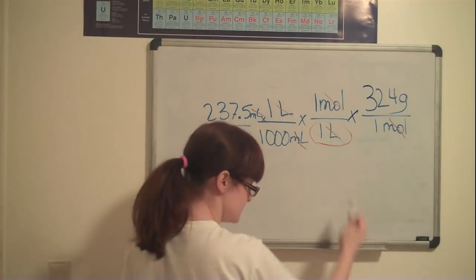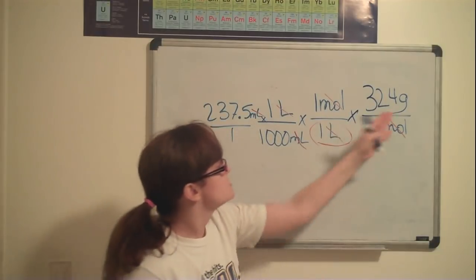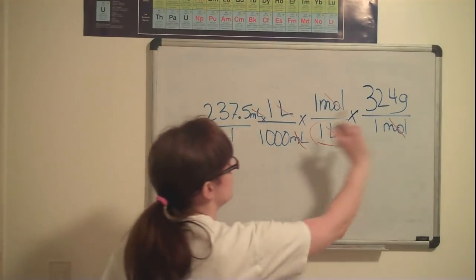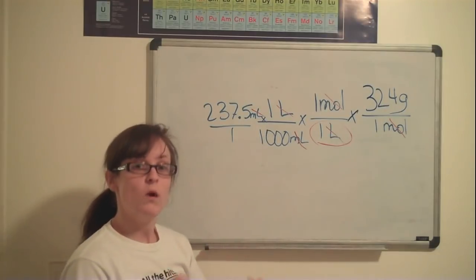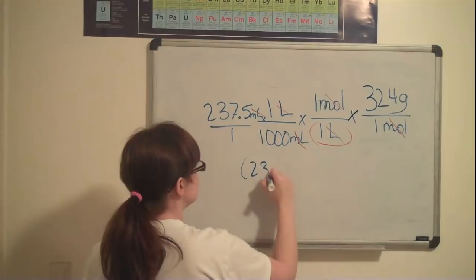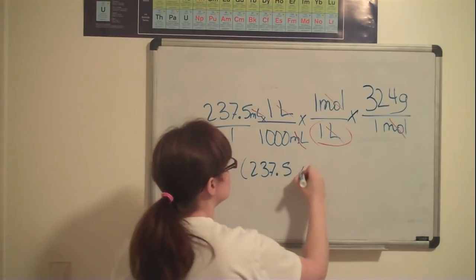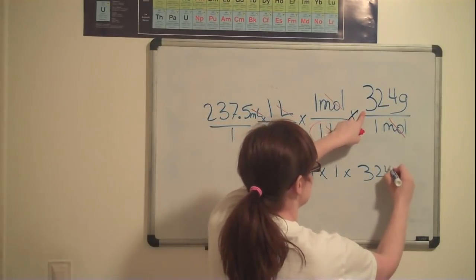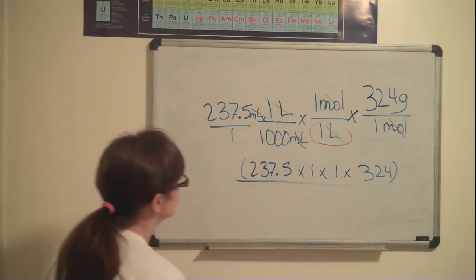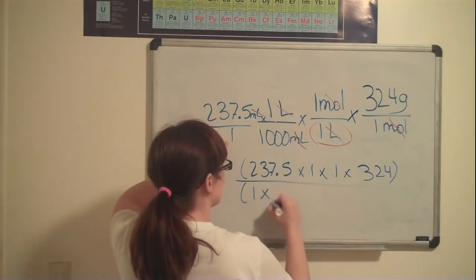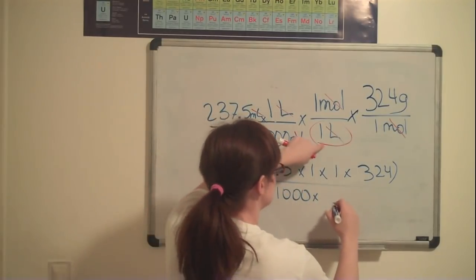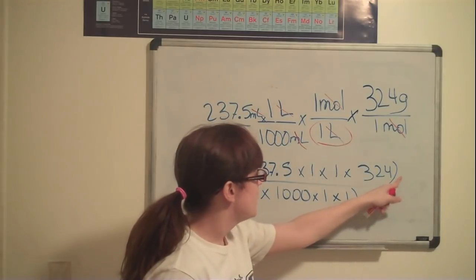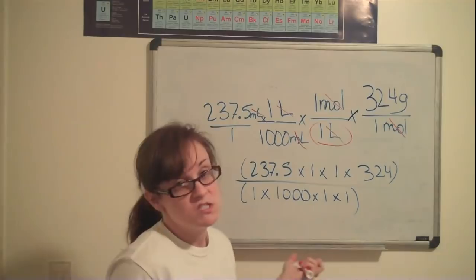Now, just a quick note about the calculation of math in this. I want you to understand what this actually means. What this calculation actually means in terms of math, in terms of what you will be putting into your calculator, is 237.5 times 1 times 1 times 324, all of which are in parentheses, divided by everything that's on the bottom: 1 times 1,000 times 1 times 1. So when you enter this into your calculator, you can either multiply this all out first, and then divide it by everything here that's on the bottom. So it would just be 1,000.